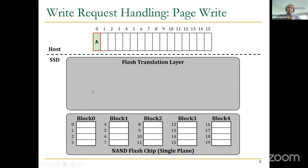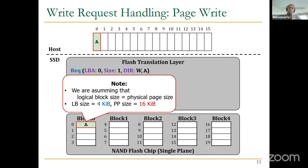Let's jump to an example. We have a write request to logical block address 0, size 1, direction write, data A. The FTL chooses the first free page in the open block and writes the data there. We assume logical block size equals physical page size — four kilobytes — but in most modern SSDs logical block size is 4 KB while physical page size is 16 KB, causing a mismatch we'll address today.